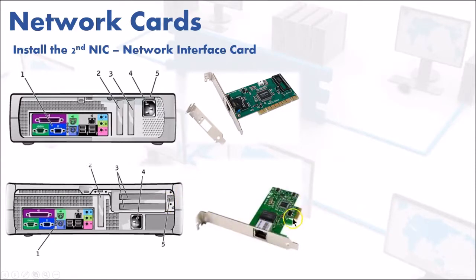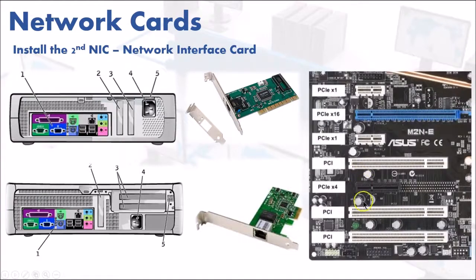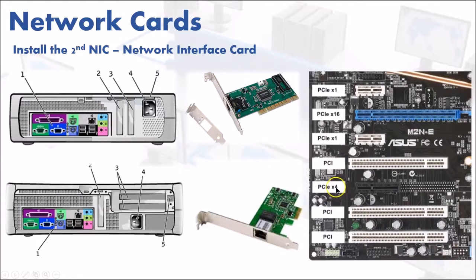In addition to height, you need to get the right interface type. This type is called PCIe, and this one is PCI — notice PCIe is much longer than PCI. Depending on your motherboard, you'll have various slot types. PCI slots are typically white, though they may be a different color. PCIe comes in different types: times four, which means four lanes, and times one, which means one lane.